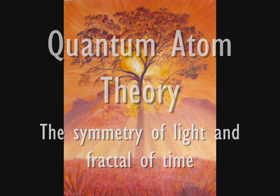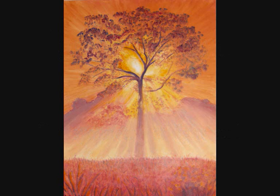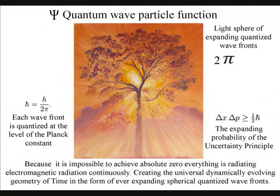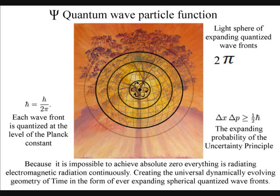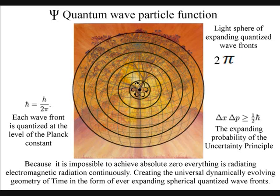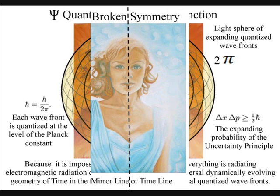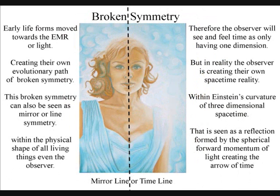In quantum atom theory, light has symmetry that forms the geometry of time and the broken symmetry of spacetime. Each observer has created their own broken symmetry of their own evolutionary path. This can be seen as line symmetry in the physical shape of the observer. They will see and feel this line symmetry as the arrow of time or as a timeline pointing from the past into the future.